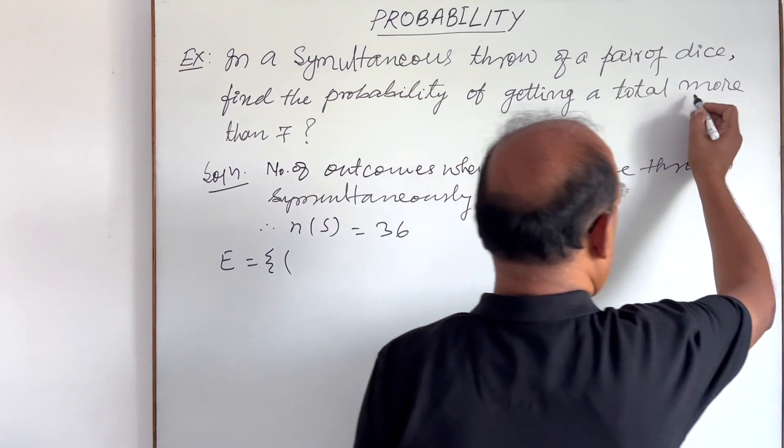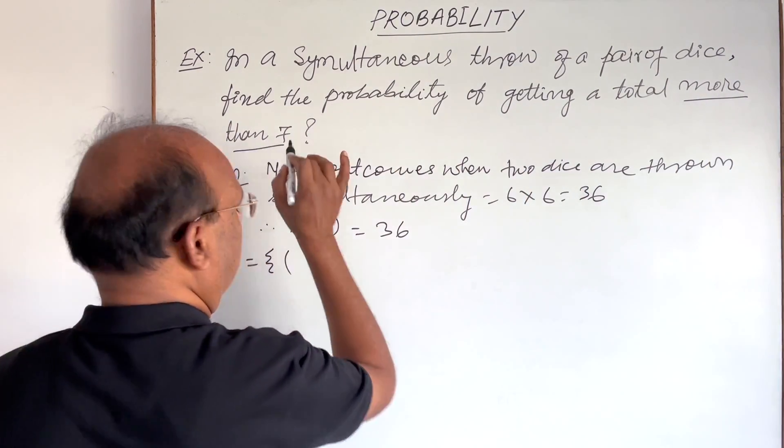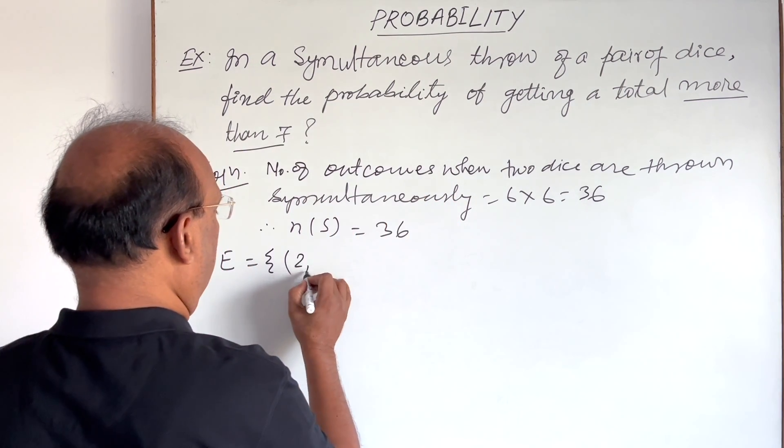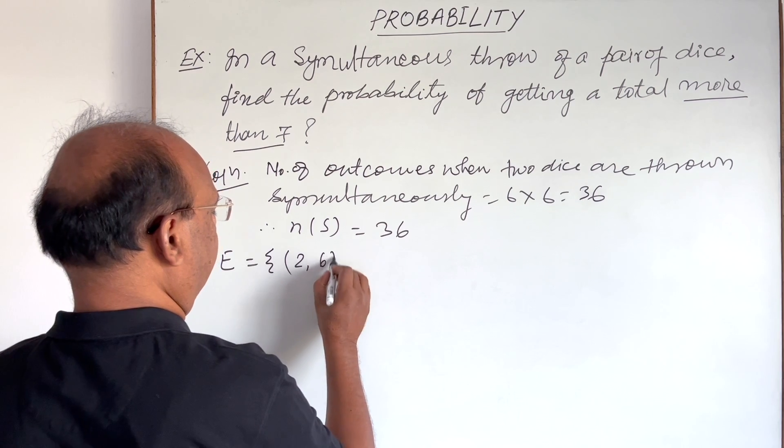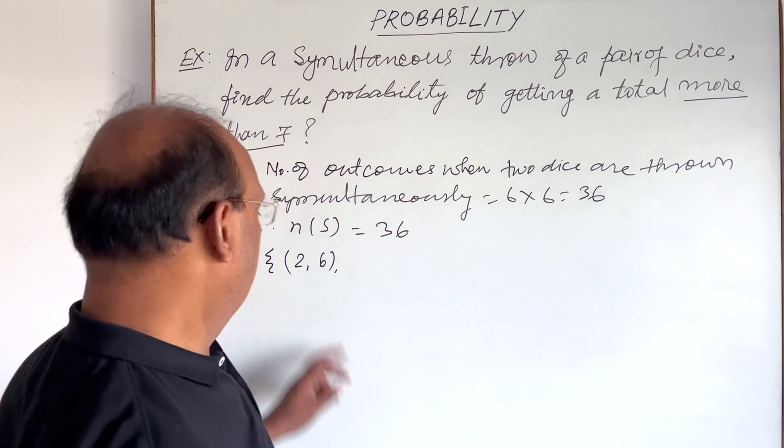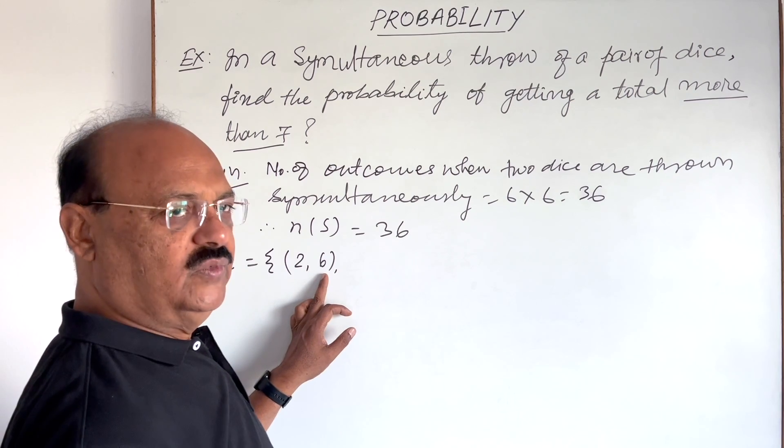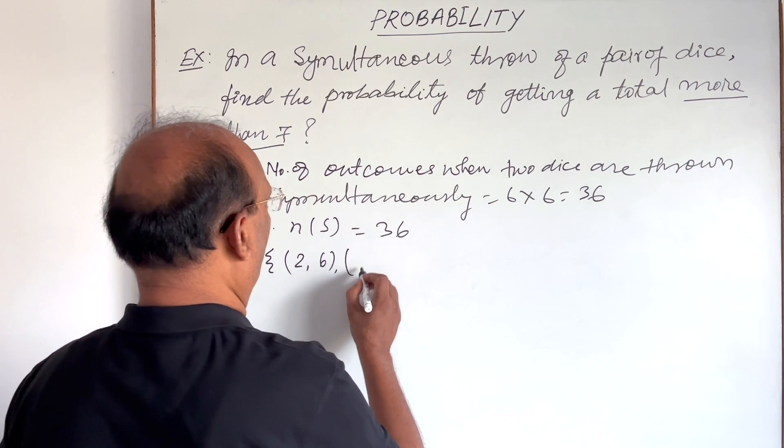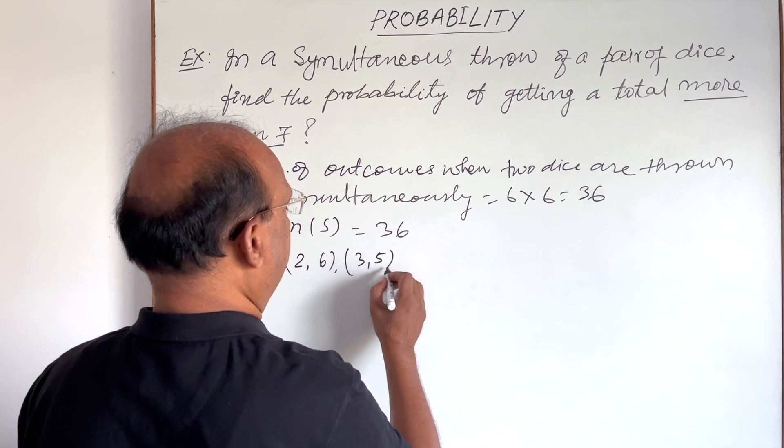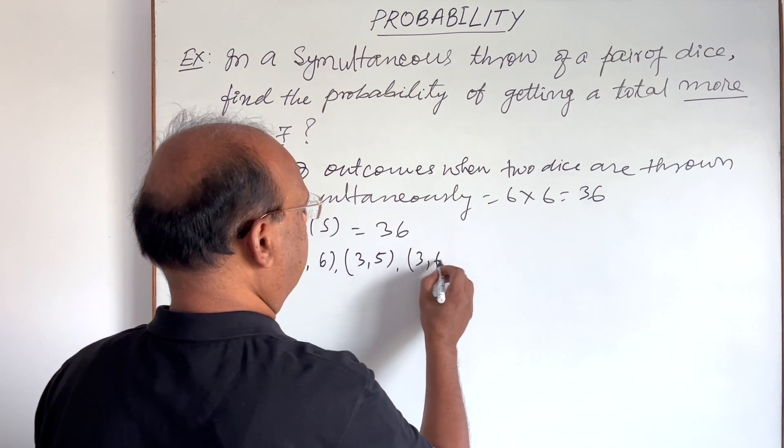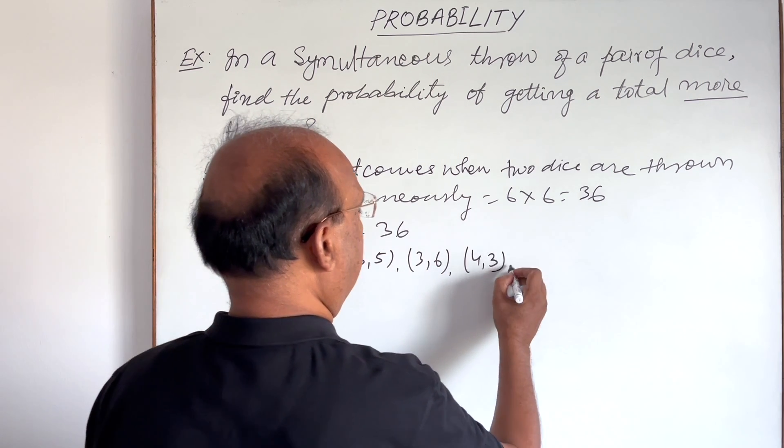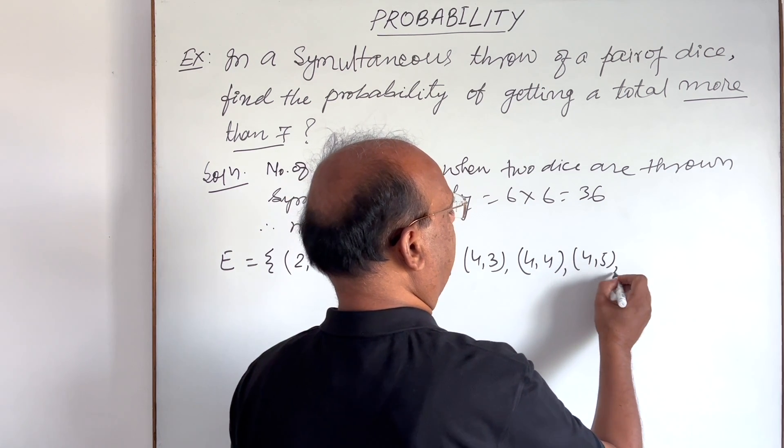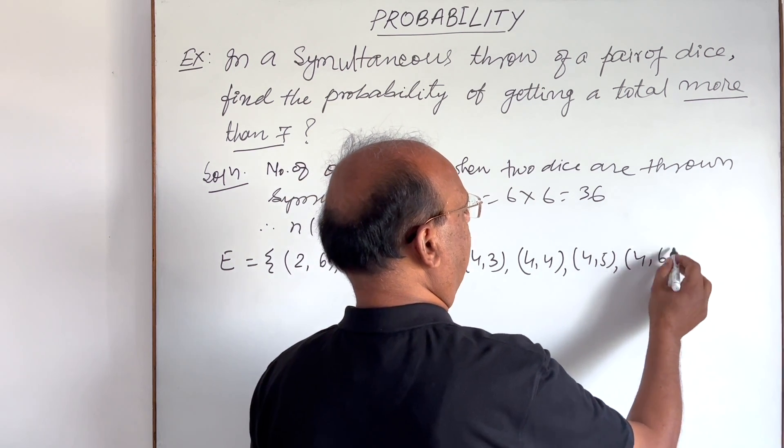So we should have sum of these two outcomes. So two from first and six from second, this is eight, more than seven. Similarly, it may be three and five, three and six, four and three, four and four, four and five, four and six.